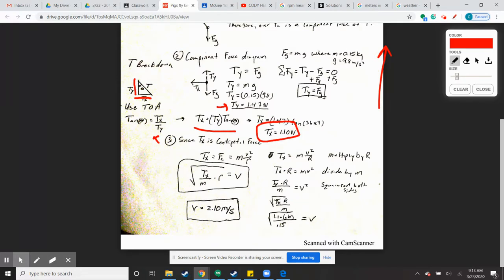Now, Tx, we said, was centripetal force, and we know that centripetal force equals mv squared over r. So if we know that, if we just set Tx equal to Fc, and then Fc equals this, we can figure out the velocity.